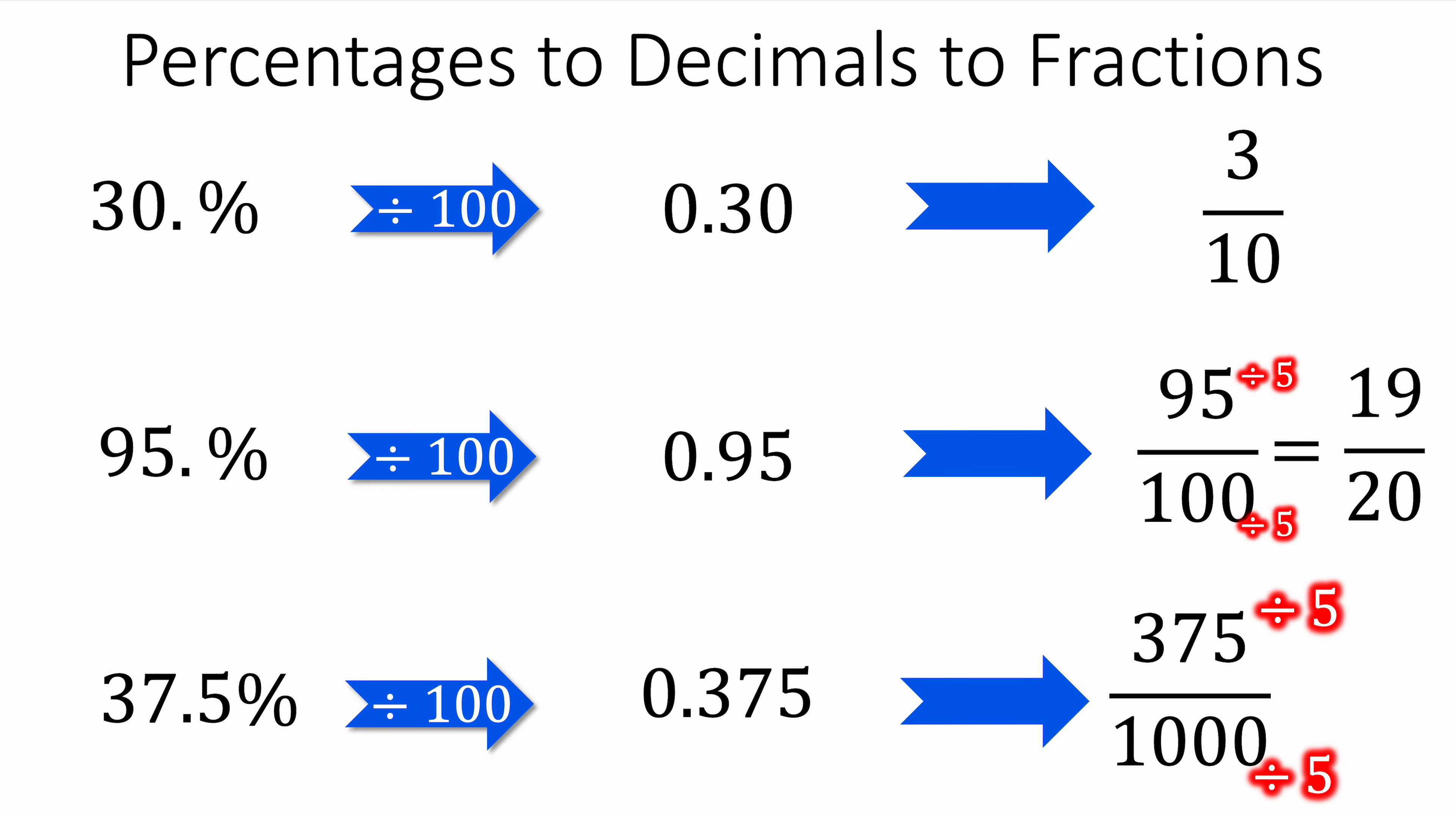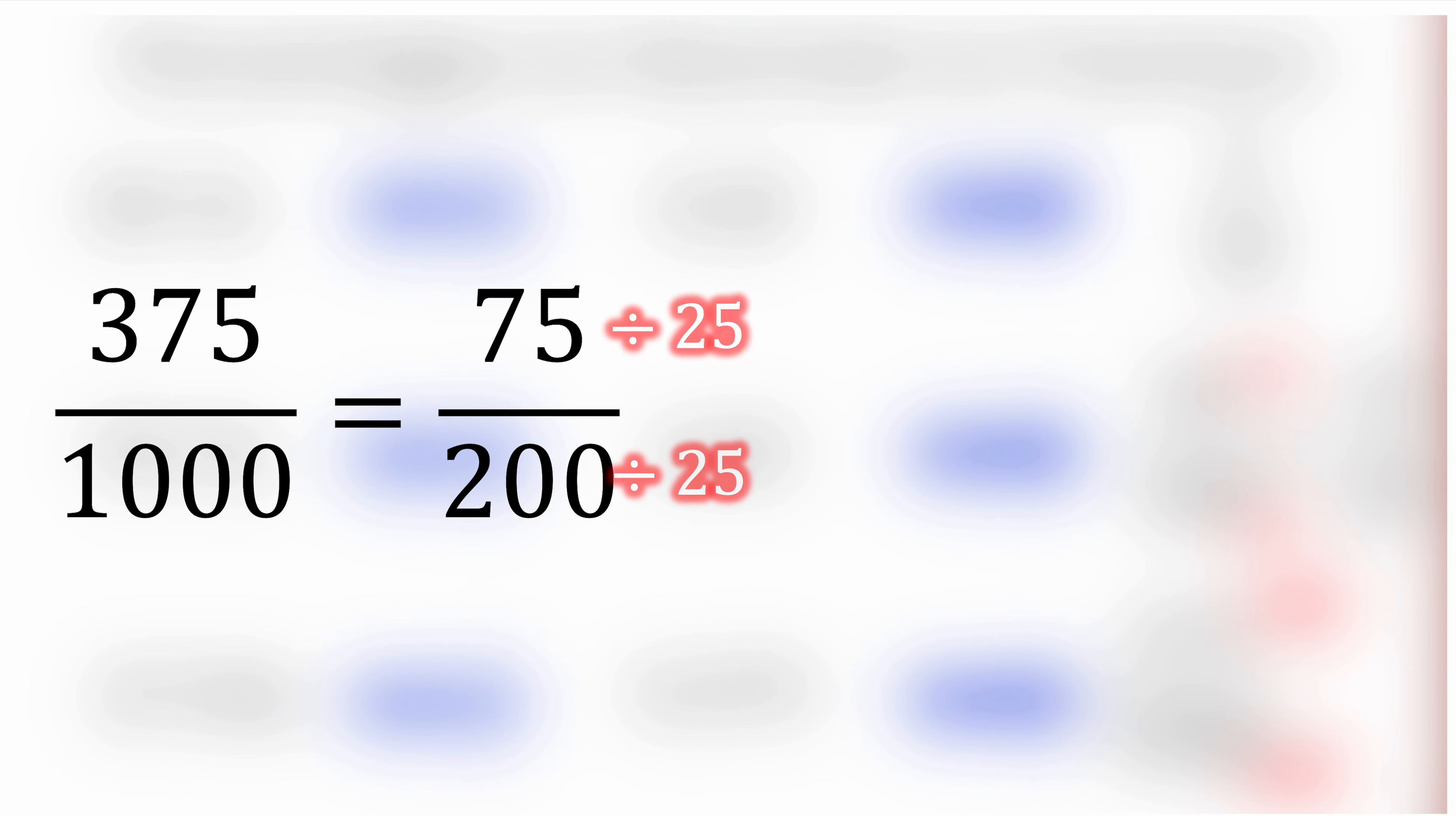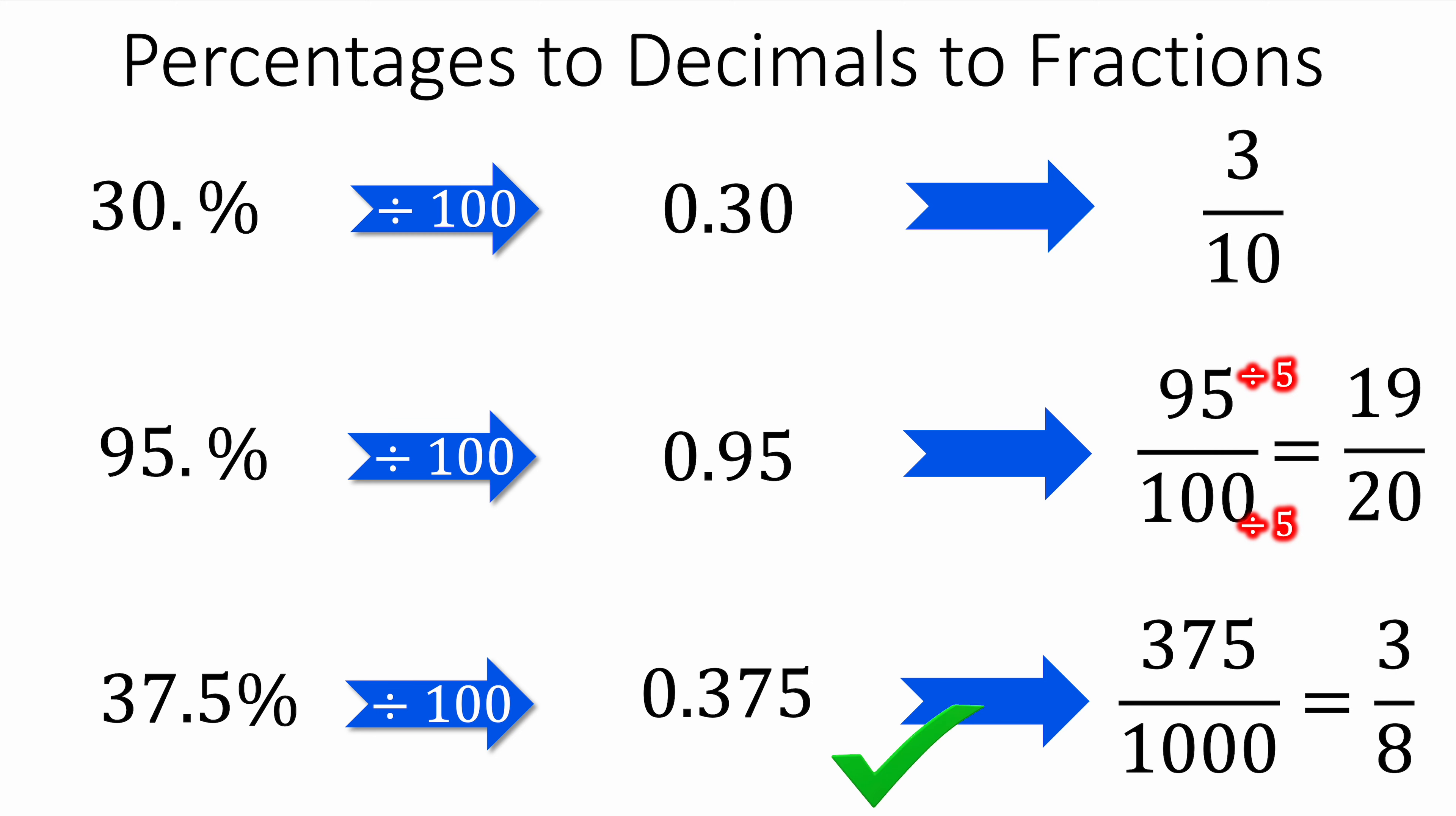0.375 is 375 out of 1000. We divide by 5, and we can do that using long division. We get 75 out of 200. Divide by 25 again. 75 divided by 25 is 3, 200 divided by 25 is 8. So we've simplified that fraction. It took us quite a while, but we managed to do it. So 375 out of 1000 is 3 eighths, and 37.5% is the same as 3 eighths. We have converted from percentages to decimals to fractions.